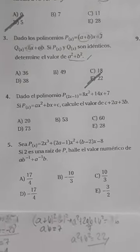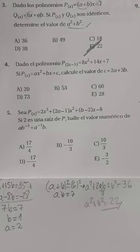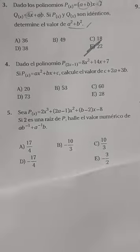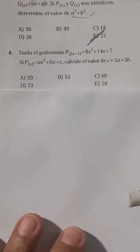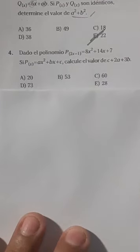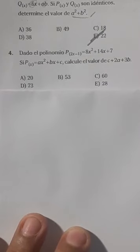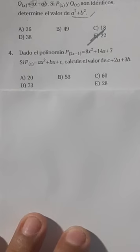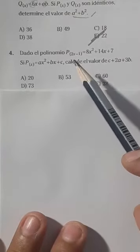Vamos a pasar al problema número 4. ¿Qué dicen, muchachos? Dado el polinomio de la siguiente manera, me están pidiendo cuánto es P de X. En mi dato, en este caso, tenemos P de 2X menos 1. Vamos a hacer lo siguiente, tú lo puedes hacer como el método del cangrejito.